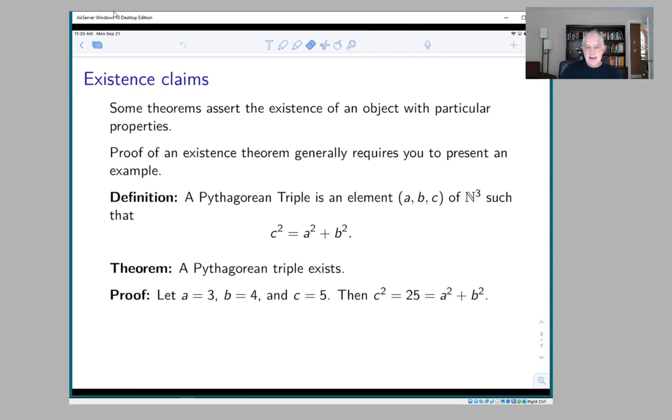Here's an example. First we need a definition: a Pythagorean Triple is a triple of natural numbers (a, b, c) with the property that c² = a² + b². The theorem is that a Pythagorean triple exists.